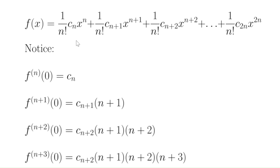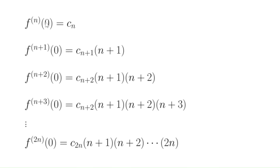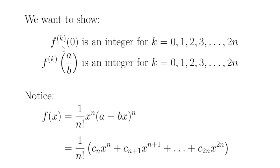For the n plus first order derivative, the c_n term gets wiped out and the higher order terms still have x's, so we get zero when plugging in 0 — except for the c_{n+1} term, where we get (n+1) factorial over n factorial, which is just n+1, times c_{n+1}: an integer times an integer. Continuing this pattern, all derivatives at 0 up to order 2N are integers — specifically, products of integers.